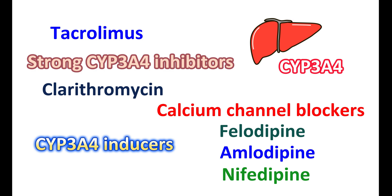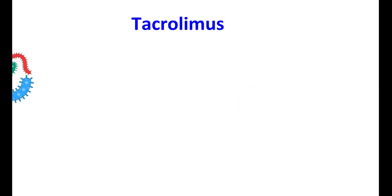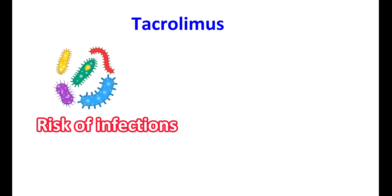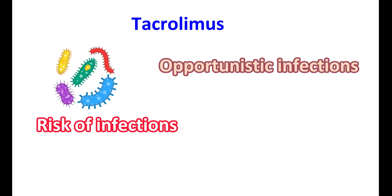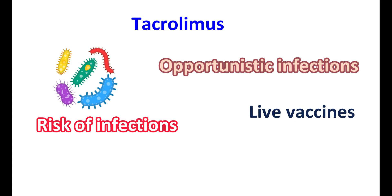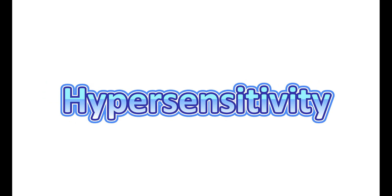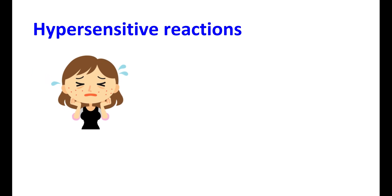Risk of infections: Tacrolimus is an immunosuppressant that increases the risk of infections. Bacterial, viral, fungal, and protozoal infections may be increased, particularly opportunistic infections. Since this medication reduces immunity, live vaccines should be avoided, as they may increase the risk of infections. Instead, inactivated vaccines can be taken after transplantation.